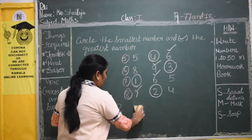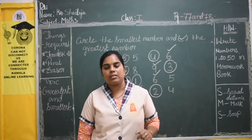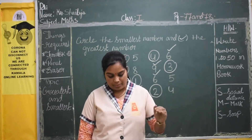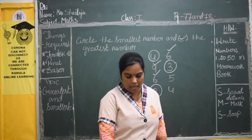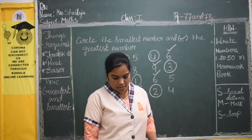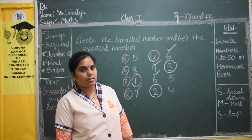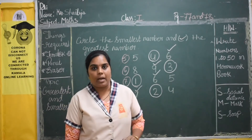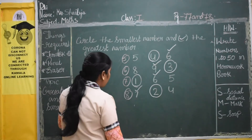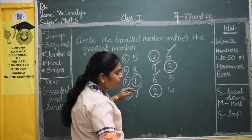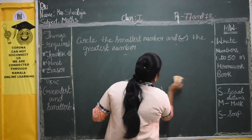So here, Chetan has 4 green apples and Ramya has 4 red apples. Both have the same number of apples. So we can say Chetan and Ramya have an equal number of apples. Both Chetan and Ramya have an equal number of apples. So to show equal number, we use...